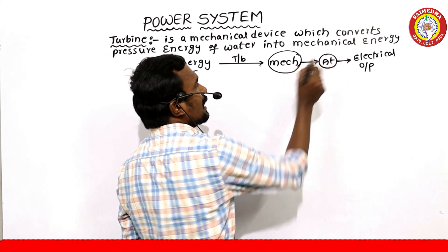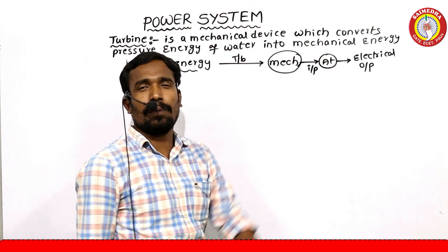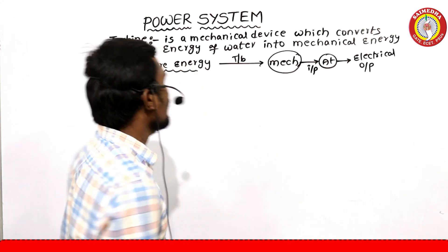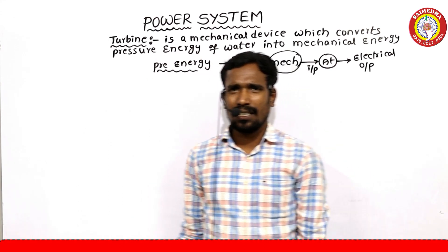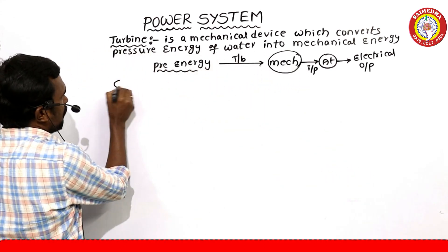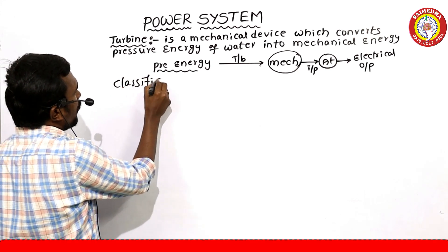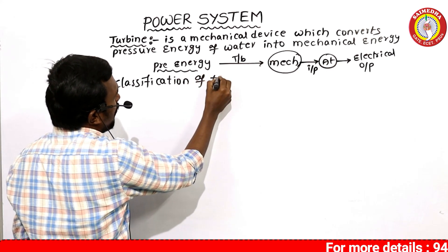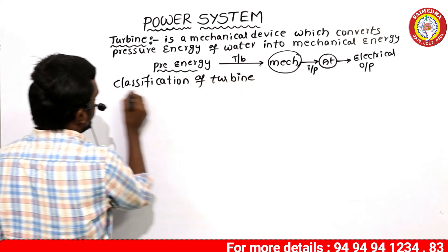The turbine output goes to the alternator, and the alternator produces electrical power. Now we will look at the classification of turbines.